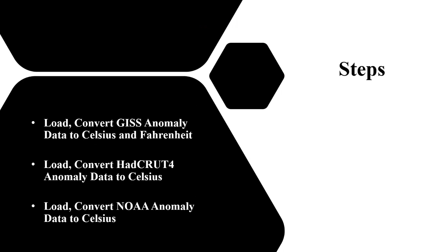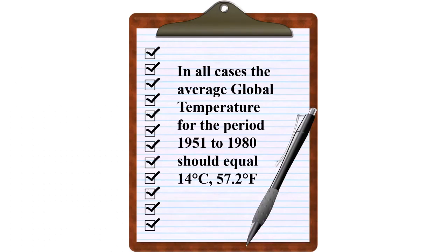The method will be demonstrated in three steps. First, GISS anomaly data will be loaded and converted to Celsius and Fahrenheit. Then HadCRUT4 anomaly data will be loaded and converted to Celsius, leaving you to convert to Fahrenheit if you wish. Finally, NOAA anomaly data will be loaded and converted to Celsius. The method is subject to falsifiability — in all cases, after conversion the average temperature for the period 1951 to 1980 must equal 14 degrees Celsius or 57.2 degrees Fahrenheit, whatever the source.